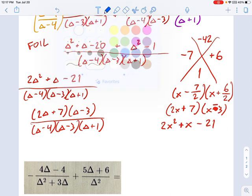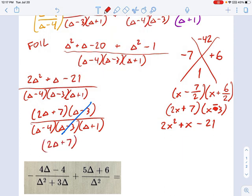And now you see we can factor out that term pretty easily. And we get our final answer, which is 2 delta plus 7 over delta minus 4 and delta plus 1. That is our final answer.